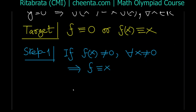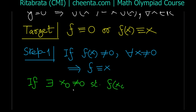Equivalently, we want to show: if there exists x₀ ≠ 0 such that f(x₀) ≠ 0, then we are discarding the possibility that f is identically x, and in that case f must be identically 0. So if f is not x, it must be 0.